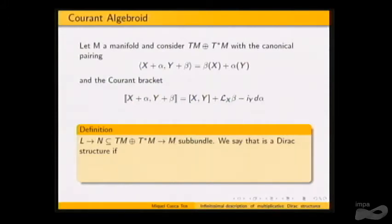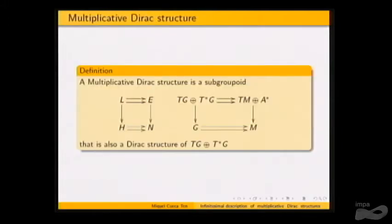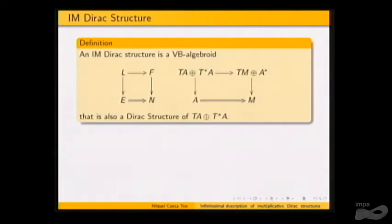We can define a Dirac structure on the generalized tangent as a sub-bundle that is Lagrangian with respect to the canonical pairing, and is involutive for the Courant bracket. Why are multiplicative Dirac structures interesting? If our base is a groupoid, we call a multiplicative Dirac structure a Dirac structure on our groupoid that is also a subgroupoid.